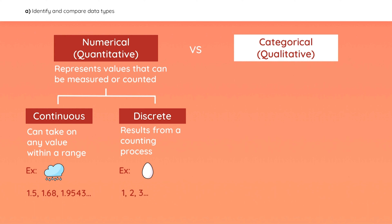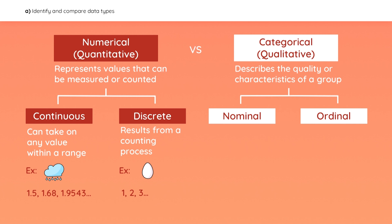The number of eggs is limited to whole numbers and a stock's price is limited to dollars and cents. Categorical data describes the quality or characteristics of a group of observations and can be split into nominal and ordinal data. Nominal data can't really be organized in a logical order — it is just a set of names or labels, such as labeling companies by industry.